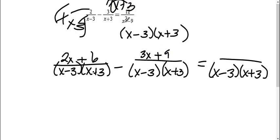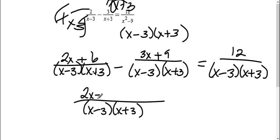And this last one already had the x minus 3, x plus 3, so I didn't have to do anything. So that stays as 12. Then I'm going to combine these to make one fraction. So we still have the x minus 3, x plus 3. When I combine this, I get 2x plus 6.